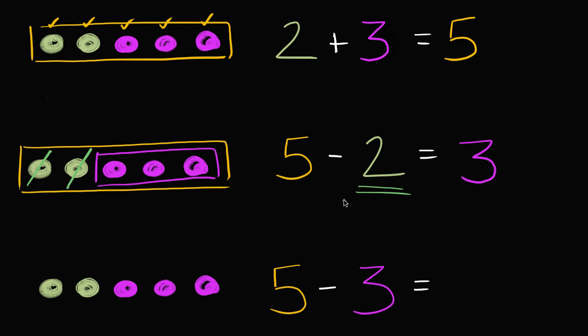And you might already see a pattern here. Two plus three is equal to five. But if you start with five and you take away two, you're going to be left with three. Look at how this is arranged and look at how this is arranged. Two plus three is equal to five, but five minus two is three.